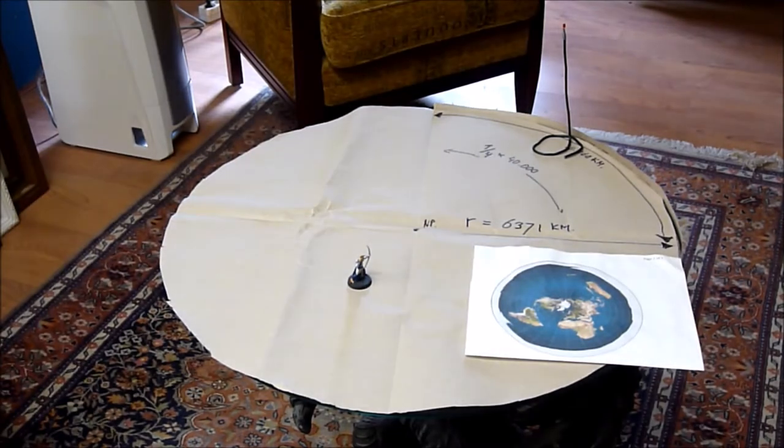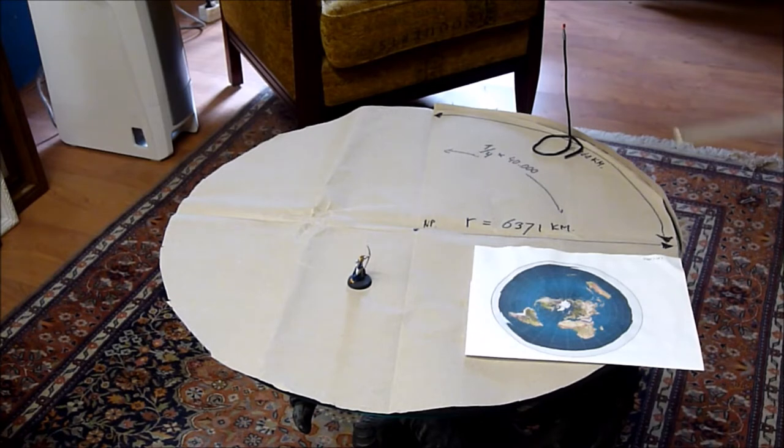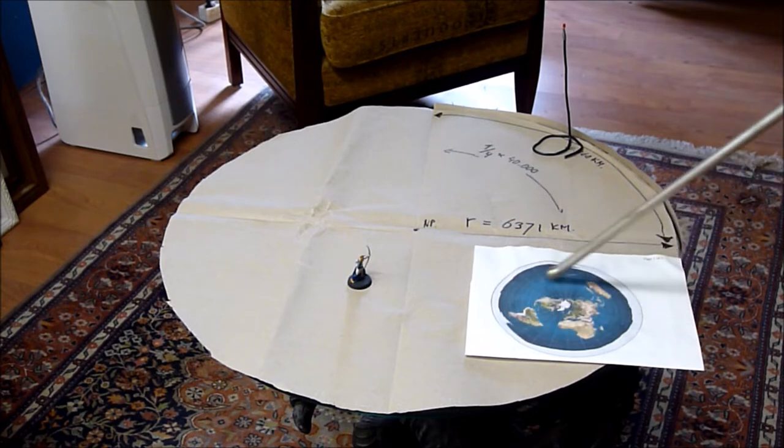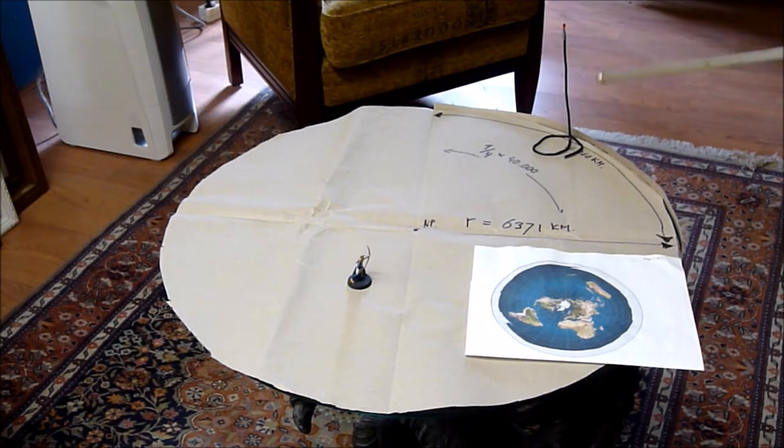Want er wordt altijd over dingen gesproken die maar zijdelings eigenlijk met de echte vorm van de aarde te maken hebben. Bijvoorbeeld de hoogte van de zon en waarom je wel of niet die zon in perspectief ziet ondergaan. Ik heb nou toch hier dat ding liggen. Dit stelt voor het binnenste stuk hier, binnen de evenaar. En ik heb dus maar even op de dag dat de zon boven de evenaar gaat, op de juiste schaal, een zonnetje gemaakt.